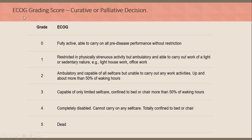ECOG grading score for curative or palliative decision: Grade 0 — the patient is fully active and able to carry on all pre-disease performance without restriction. Grade 1 — restricted in physically strenuous activity but ambulatory and able to carry out light or sedentary work such as light housework and office work. Grade 2 — ambulatory and capable of all self-care but unable to carry out any work activities, up and about more than 50% of waking hours. Grade 3 — capable of only limited self-care, confined to bed or chair more than 50% of waking hours. Grade 4 — completely disabled, cannot carry on any self-care, totally confined to bed or chair. Grade 5 — dead.